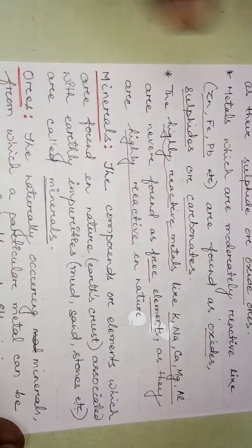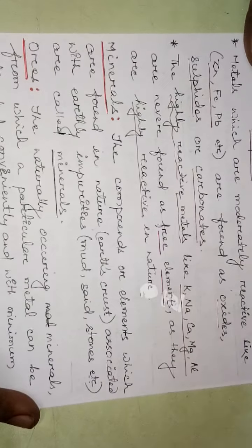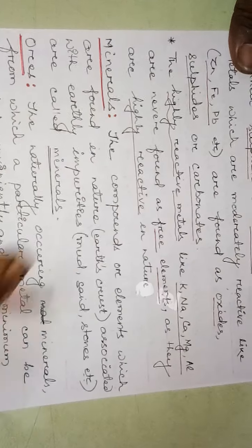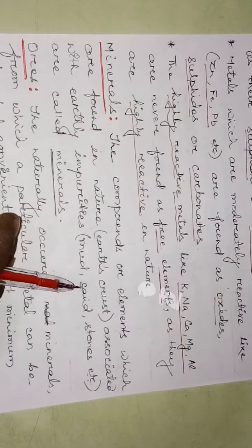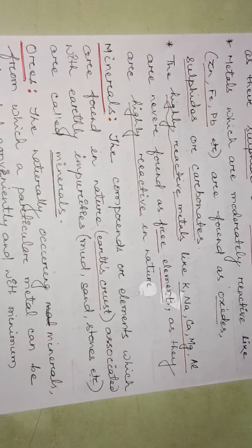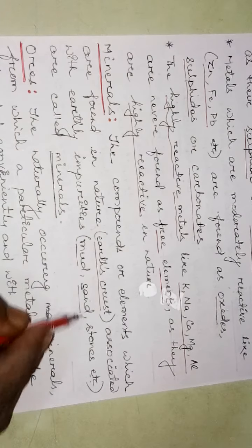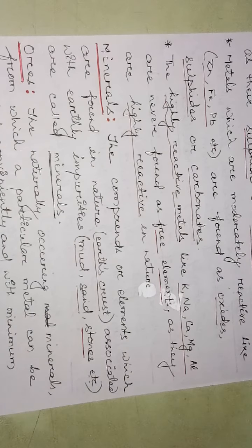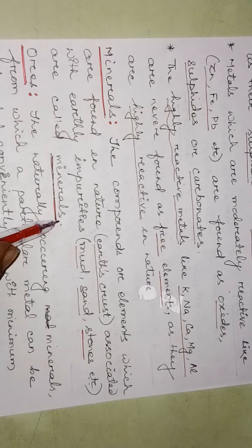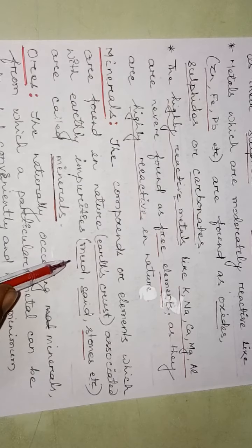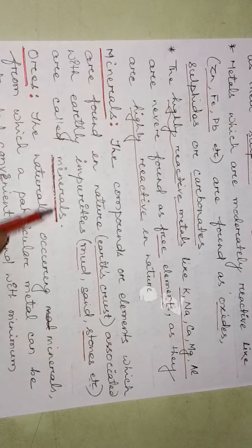What is a mineral? The compounds or elements which are found in nature, that is the earth's crust, are called minerals. Metals are available in the earth's crust associated with earthly impurities like mud, sand, and stones. The compounds found in the earth's crust along with mud, sand, and stones are called minerals.